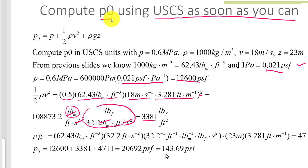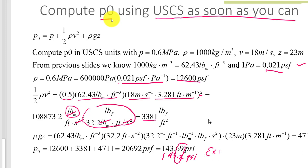In the previous slide we ended up with 143.2 psi. Don't be alarmed by what looks like a large difference — this is just rounding error. As an exercise, you should compute this same example to five digits of precision and see if you can get the two methods to agree.